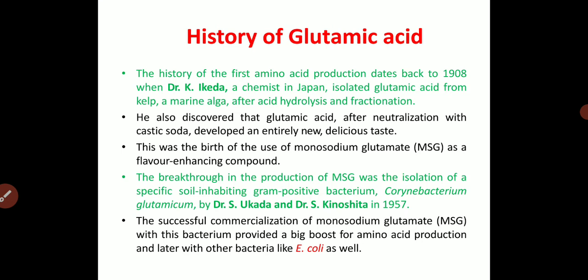Corynebacterium glutamicum is the bacterium used for the production of glutamic acid, which was discovered by Dr. S. Ukada and Dr. S. Kinoshita in the year 1957. You should also note the different scientist names and the years in which they discovered these concepts. The successful commercialization of monosodium glutamate with this bacterium provided a big boost for amino acid production, and later with other bacteria like E. coli as well.